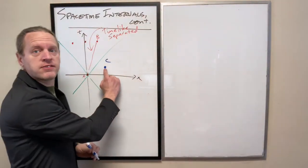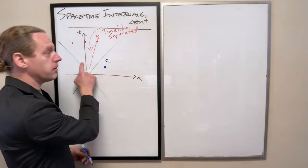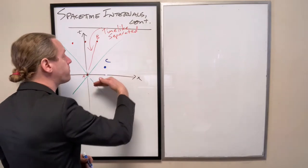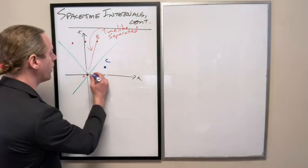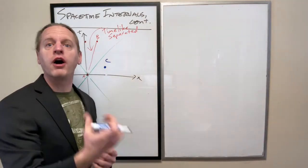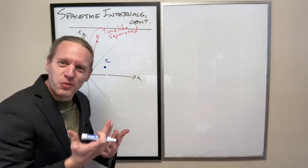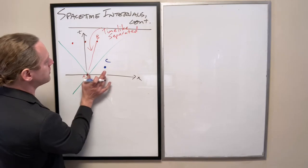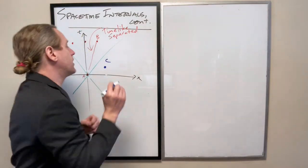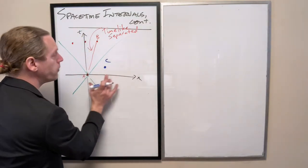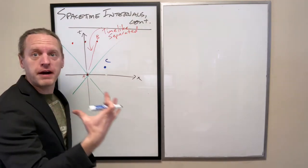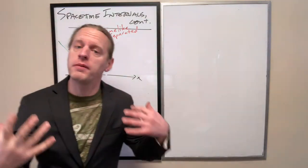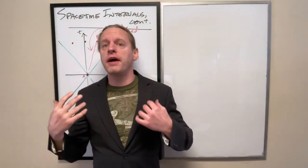If event C is outside of the light frame of A, you can always find some reference frame where events A and C actually are simultaneous. It's weird, but it's true. If events A and C are not causally connected, there will absolutely be some other reference frame where you can find them to be perfectly simultaneous. And here's how you might go about doing that.